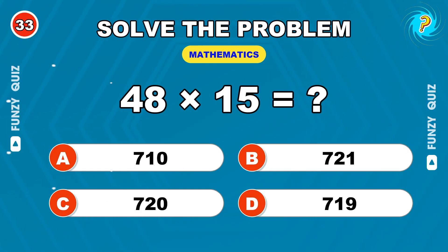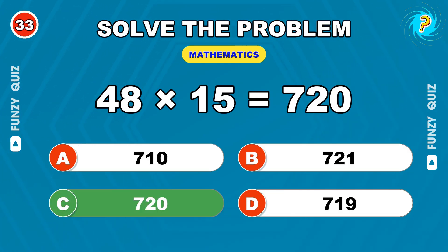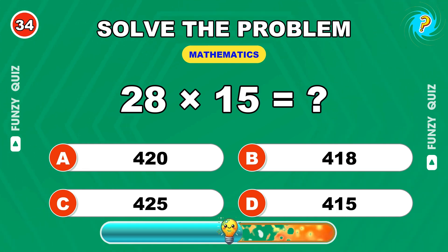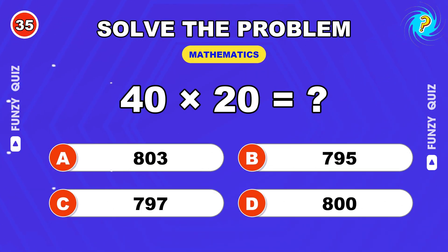Major multiplication. 48 times 15. 720. Don't slow down. 28 times 15. 420.